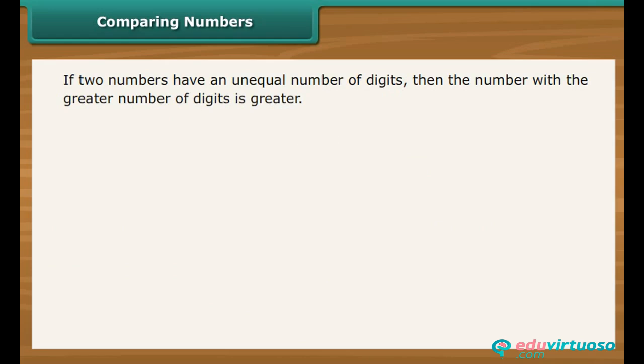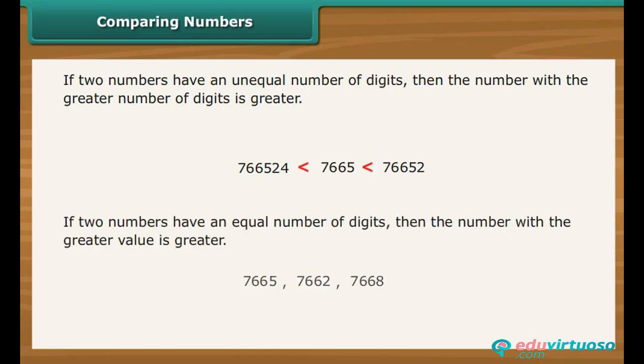If two numbers have an unequal number of digits, then the number with a greater number of digits is greater. If two numbers have an equal number of digits, then we need to compare numbers at each position.